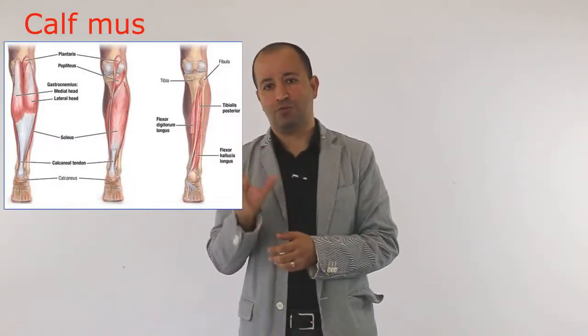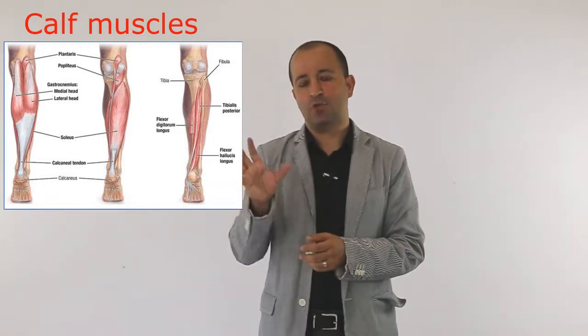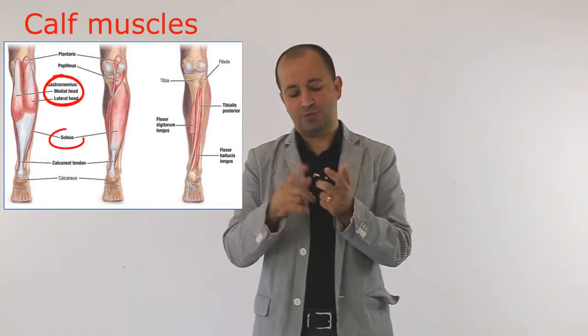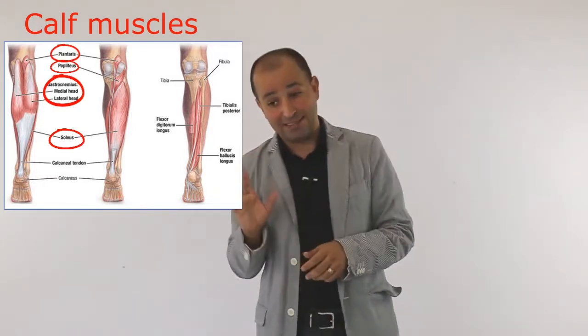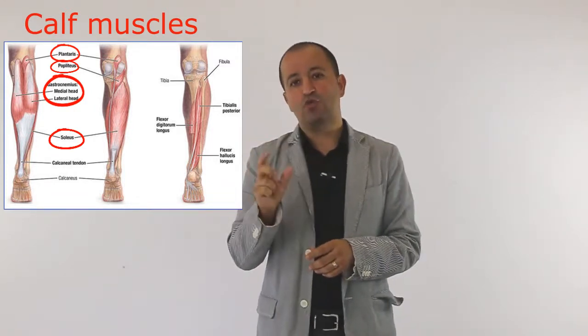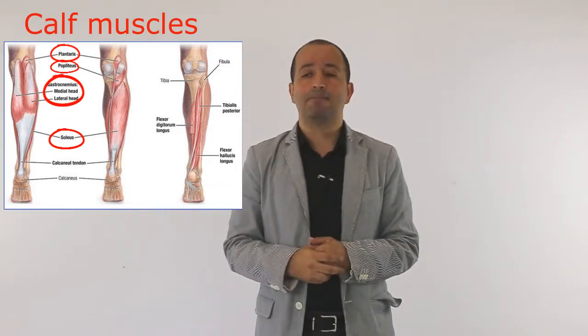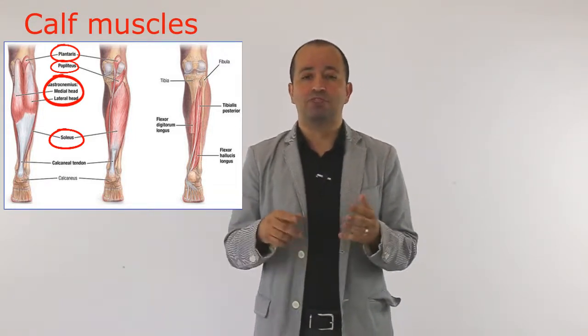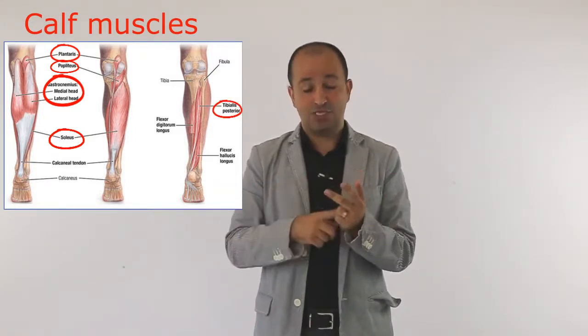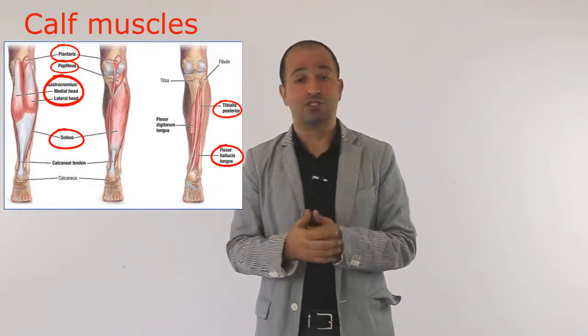The action is plantar flexion of the ankle. The calf muscles are in two groups. The superficial group includes gastrocnemius, soleus, plantaris, and popliteus. The deeper group performs flexion of the toes and includes tibialis posterior, flexor hallucis longus, and flexor digitorum longus.